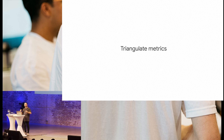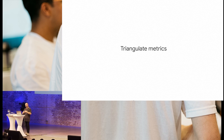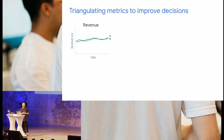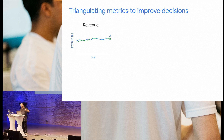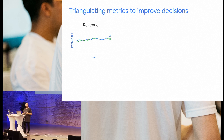Once you have that, the true magic starts, because now you can triangulate metrics — using a bunch of those metrics together to create a full picture and understand what's happening. For example, let's say we have a new version B of our music streaming app and our existing version A. We've rolled it out to a certain number of users and we're measuring UX metrics for both. We look at revenue and see it's more or less the same — so things seem to be going well with the new version.